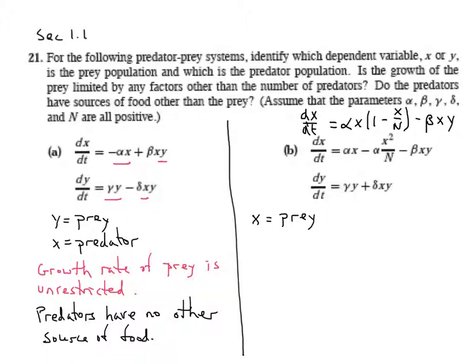Because it grows by itself, limited only by its carrying capacity. This term says it grows naturally, limited by the carrying capacity, and it decreases based upon these interactions.